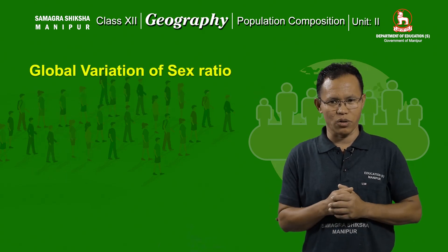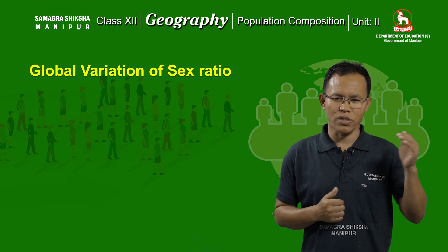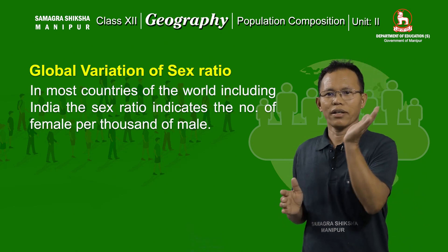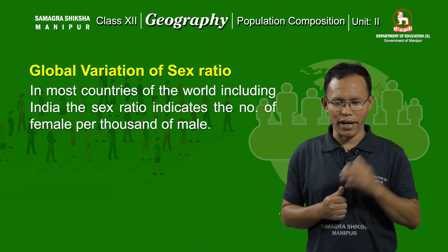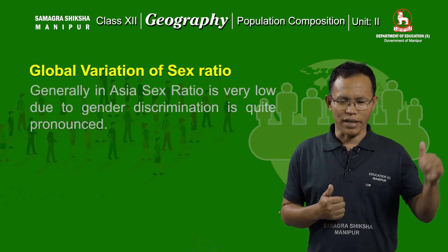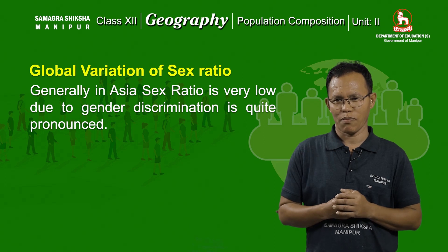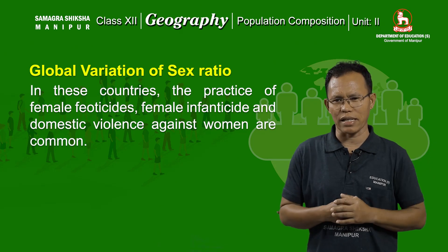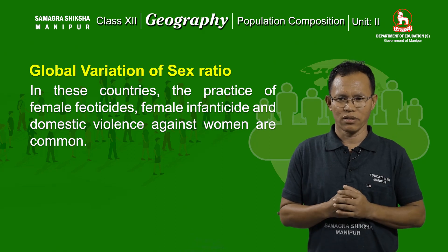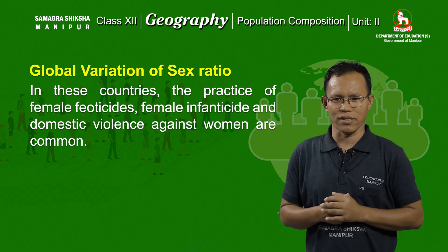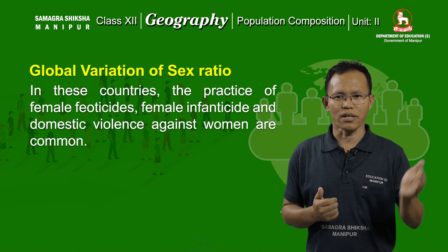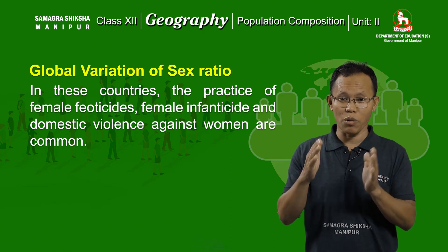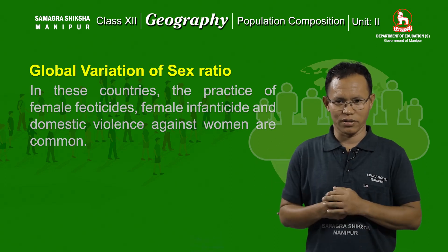Next, we come to global variation of sex ratio. Globally, there is great variation in sex ratio all over the world. In most countries, sex ratio is expressed in terms of female population, except in the USA. Generally in Asia, the sex ratio is very low. In countries where gender discrimination is quite pronounced, female feticide, female infanticide, and domestic violence are common practices. Therefore, in such societies the low sex ratio means the number of males is more than the number of females.